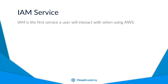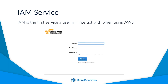IAM is the first service a user will interact with when using AWS. The reason being, the identity needs to be authenticated by IAM before accessing any AWS resource. This could be via the AWS Management Console within your browser, or via the AWS command line interface using an API call trying to gain access to a resource.